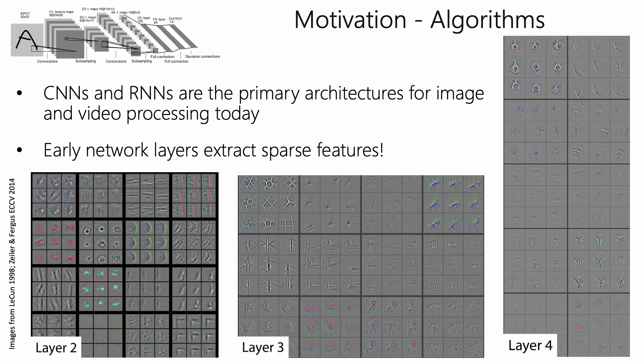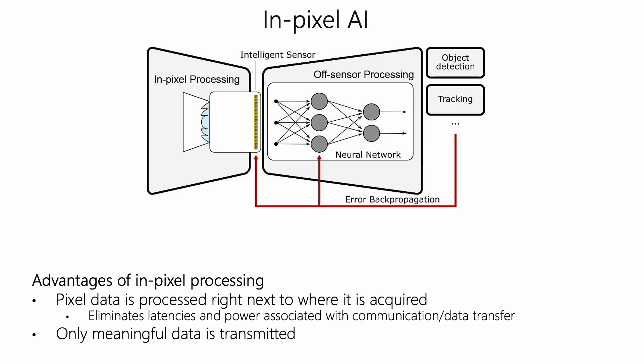If we shift this to earlier in the pipeline, such as to the sensor plane, we can send out solely the useful sparse features. So in these edge devices that use camera data for vision tasks, in-pixel AI can be a perfect solution to decrease power.